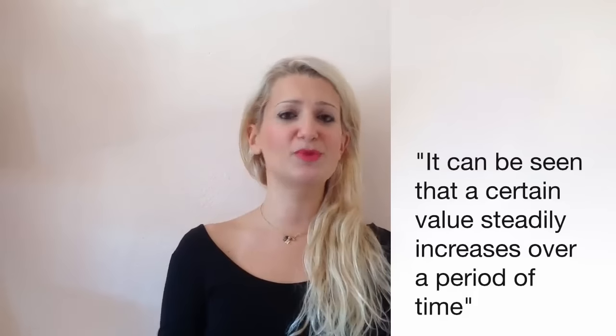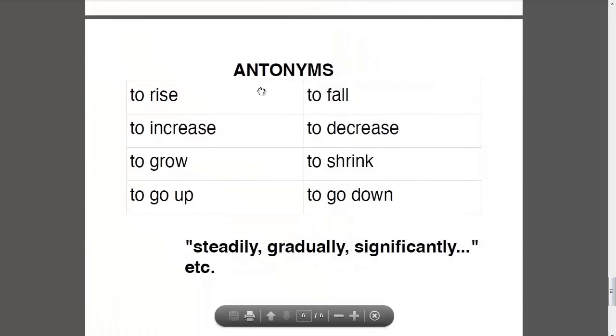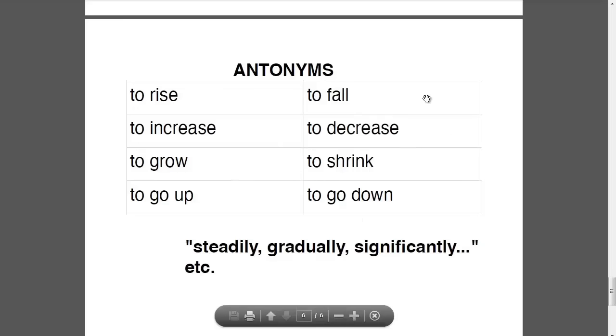These are just examples but you can use them accordingly throughout your whole essay. You will also need some vocabulary in order to describe how the values change over time. Let's go and check out some verbs along with their antonyms — these will really help you have variety in your phrasing.